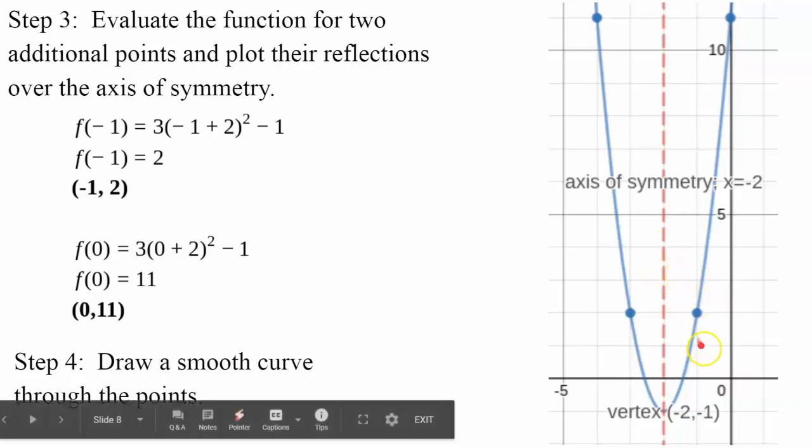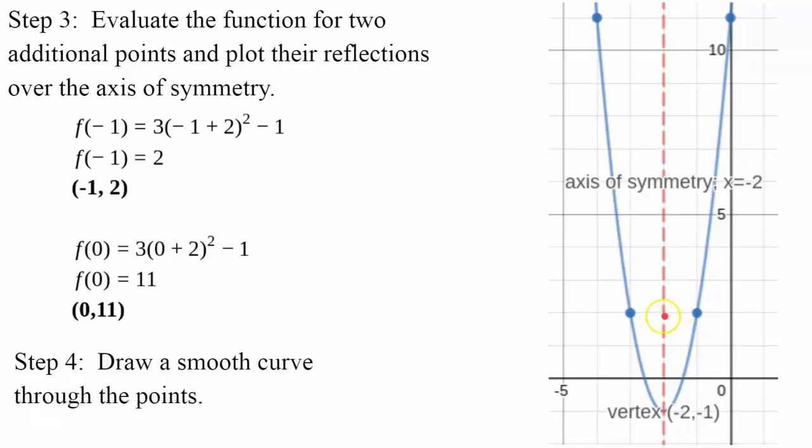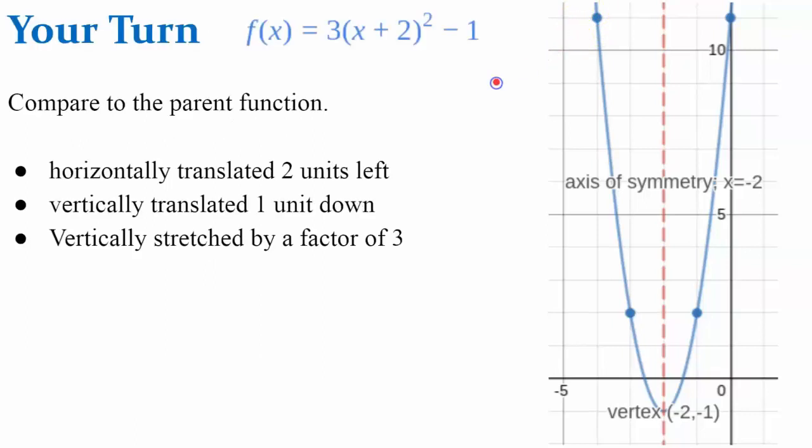I've plotted my point, negative 1, 2, one unit to the right. My other point, (0, 11), is two units to the right, reflect it to get negative 4, 11, two units to the left. And I drew a smooth curve through my points.